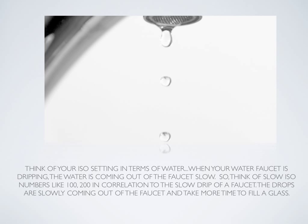I like to tell my students to think of your ISO setting in terms of water. For example, when your water faucet is dripping and you're trying to fill a glass with drips of water coming out very slow, it's going to take a long time to actually fill up that glass. So think of slow ISO numbers like 100 and 200 in correlation to the slow drip of a faucet trying to fill a glass. The drops are slowly coming out and are going to take more time to fill that glass. Just like when you have your ISO numbers low — 100, 200, 400 — they're going to take more time for you to take that photo.